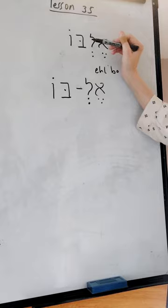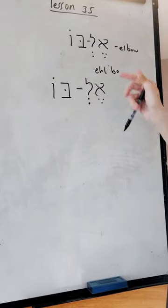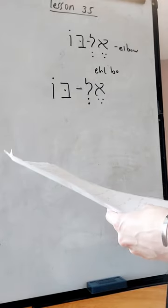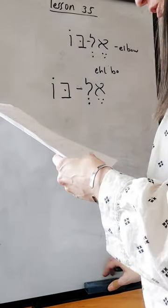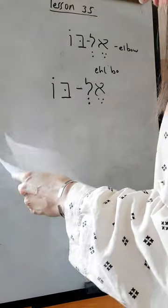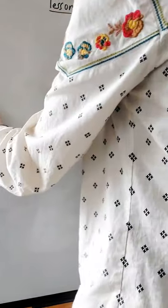Every time you see the schwa just put basically a little dash to break the word up. Elbow, it's a little pause. So the schwa in the middle of a word is like a stop sign, it divides the words into syllables.